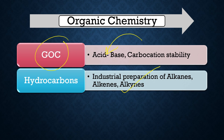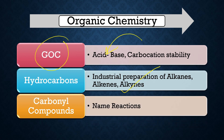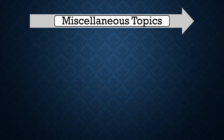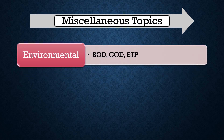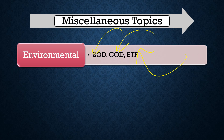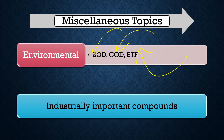In hydrocarbons, learn about complete basic chemistry but must focus on industrial preparation of alkanes, alkenes, and alkynes — basically the Kolbe's reaction. For carbon compounds, mostly study the named reactions associated with them. For miscellaneous topics: environmental chemistry is very important. In any industry, whether carbon steel or alloy industry, there are some waste products and important quality parameters. You must learn about BOD — biological oxygen demand — and COD — chemical oxygen demand — and effluent treatment plants.